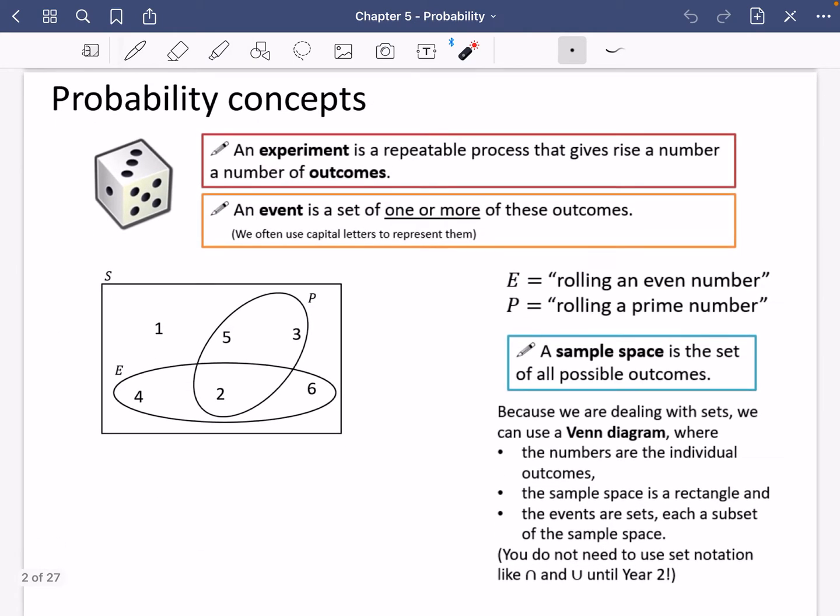An experiment is a repeatable process that gives rise to a number of outcomes. An experiment could be rolling a dice. Equally, an experiment could be going outside and seeing if it's raining. It doesn't have to be something that feels like it's traditionally like rolling a dice or spinning a spinner; it can be other kinds of things that we can measure as well. The outcomes when you're rolling a dice could be the numbers on the dice. If you go outside and see if it's raining, it could be yes it is raining or no it is not raining. An event is a set of one or more of these outcomes.